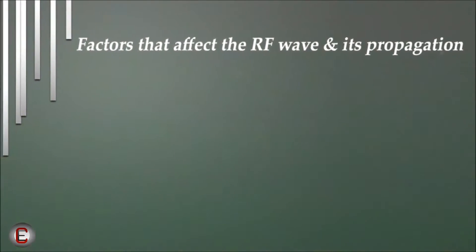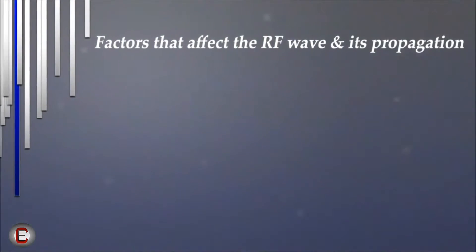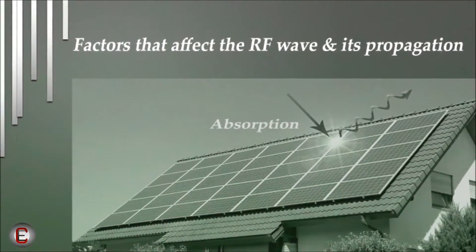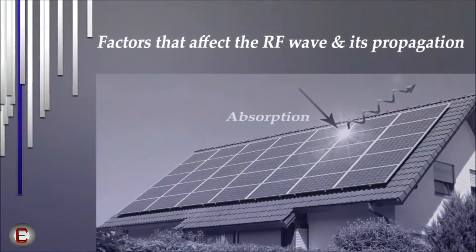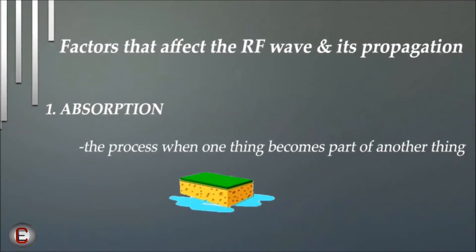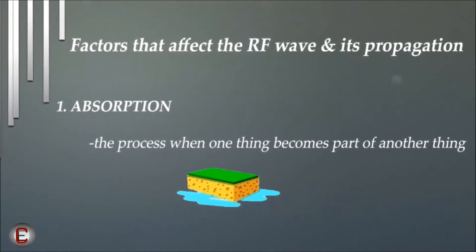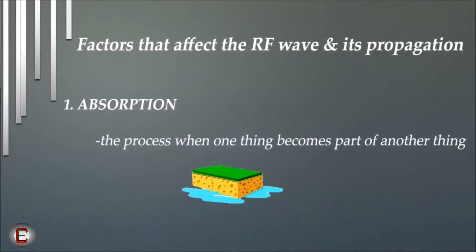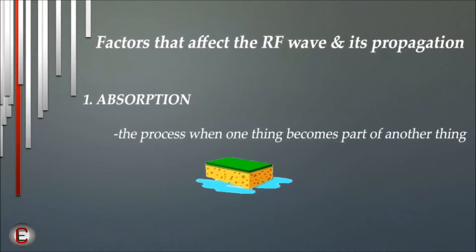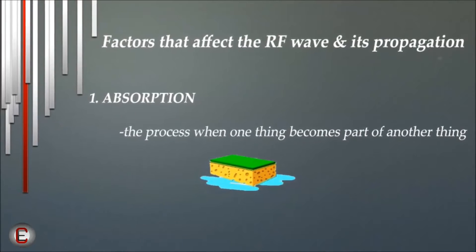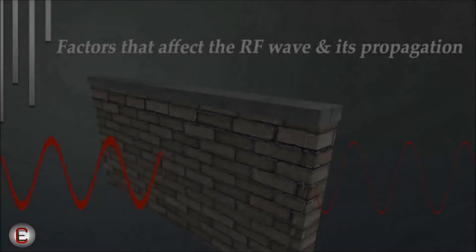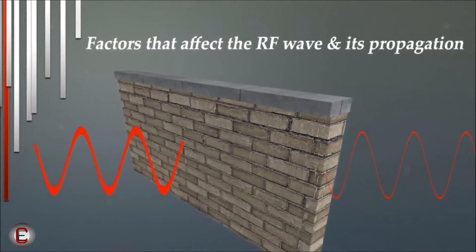There are various factors that affect the RF wave and its propagation. Let's discuss them in detail. Absorption is defined as the process when one thing becomes part of another thing, or the process of something soaking, either literally or figuratively. The best example is a sponge in water. I think this example does not require any further explanation.